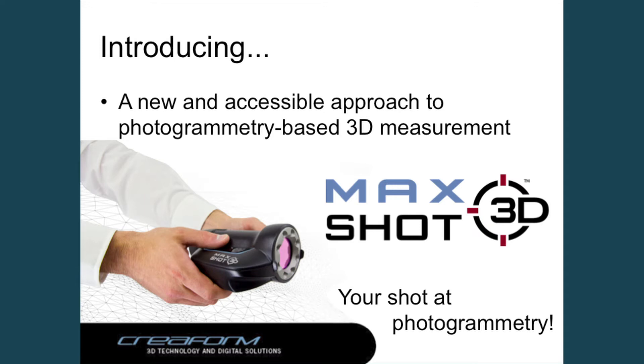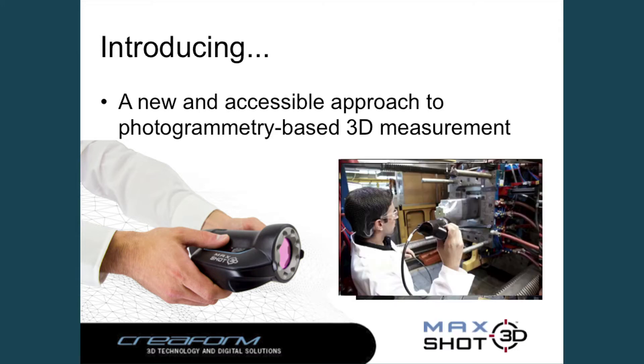We are introducing a new product on the market today: the MaxShot 3D. What you see is pretty simple — simply a video camera, nothing really particular. The advantage is more in the software, because photogrammetry works with digital images. You just take digital images, and it's more what you do with the image that gives you an accurate model or not.